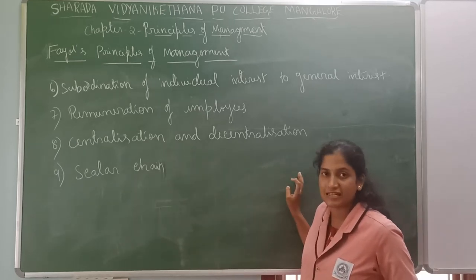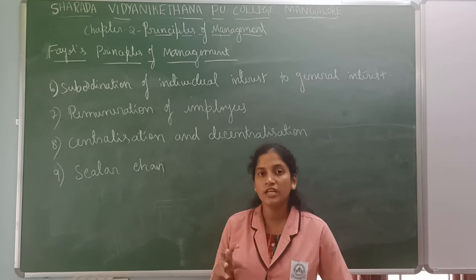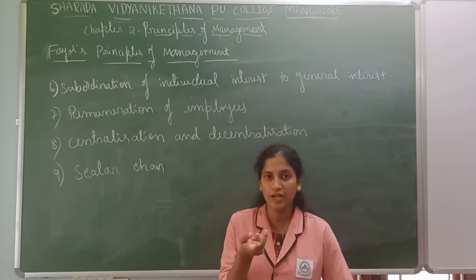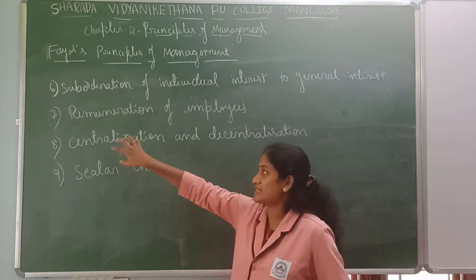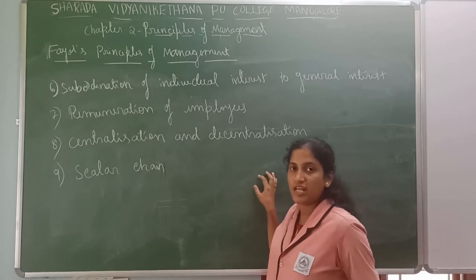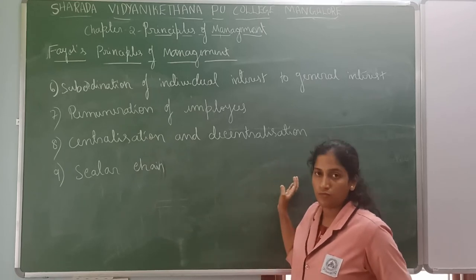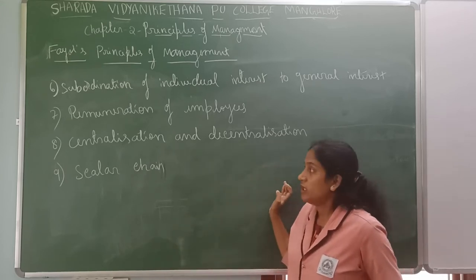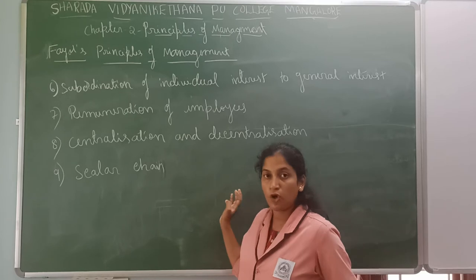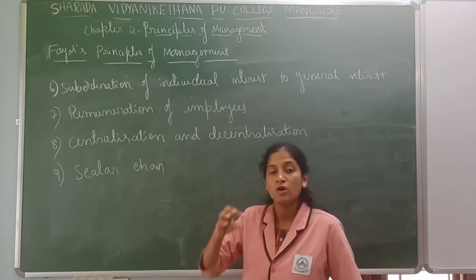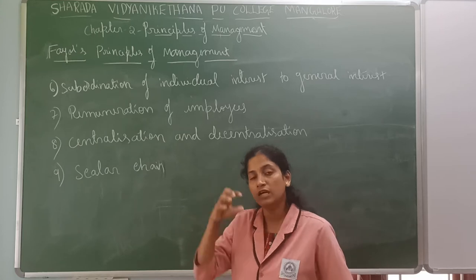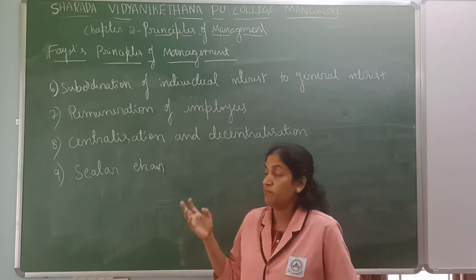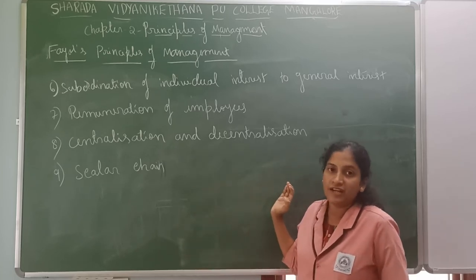Next we have centralization and decentralization. Where the decision-taking authority is in the hands of one person, it is called centralization. Where the decision-taking authority is in the hands of more than one — it might be a few or many people — then it is called decentralization. Decentralization is followed in large organizations where one boss is not enough to take decisions and implement them.